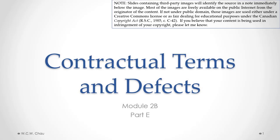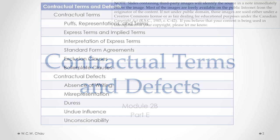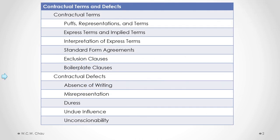Hello, it's Waylon Chow, and this is Contractual Terms and Defects, Module 2B, Part E. In this part, we'll look at the contractual defects of duress, undue influence, and unconscionability. All of these three defects can be grouped under the heading of unfairness that occurs during the bargaining process of a contract.